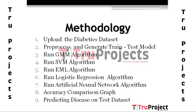The next module runs the GMM algorithm — Gaussian Mixture Model. In this module we build the model, train it with the training dataset, test it with the test dataset, and calculate the accuracy. The Gaussian Mixture Model is a probabilistic model that assumes all data points are generated from a mixture of a finite number of Gaussian distributions with unknown parameters.